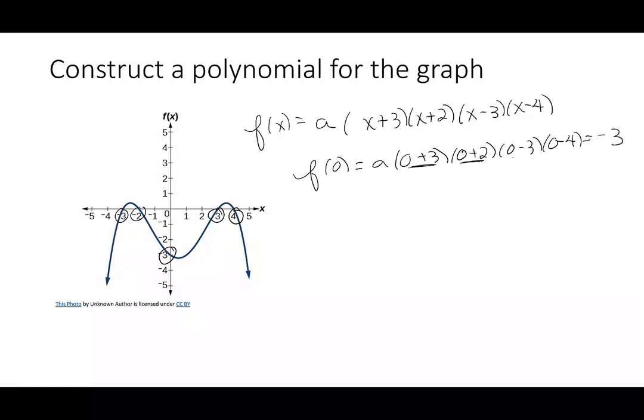So I have 3 times 2 times negative 3 times negative 4. Altogether, I have 72a is negative 3. So we'll divide. I get a is negative 3 over 72, which is negative 1 over 24.